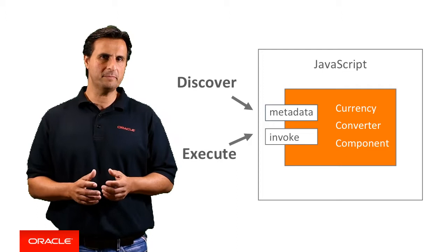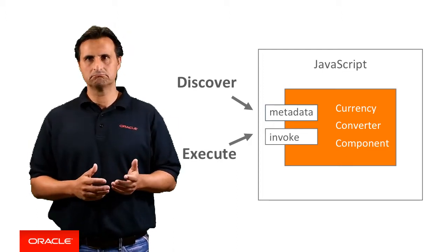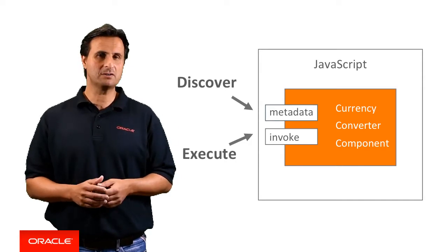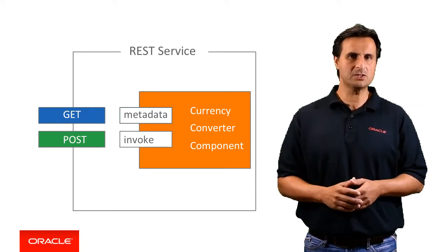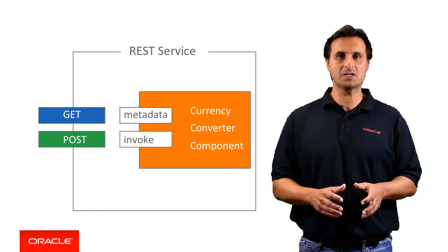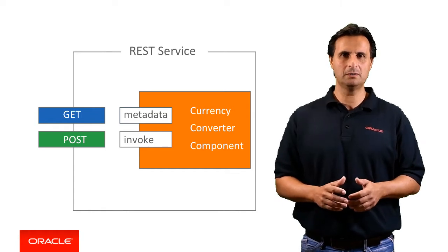For the currency converter, the metadata describes the input parameters like base currency, base amount, and the target currencies you want to have a quote for. Oracle custom components are deployed to the internet, which means they could be on-premise or in the cloud. JavaScript files by themselves are not directly accessible on the internet, so we need some sort of transport medium. In Oracle Intelligent Bots, custom components are transported by a standard REST service that you build. And because the REST service is such a key element of the component service architecture, we refer to it as the custom component service, or simply the component service.